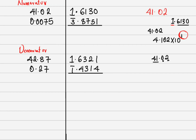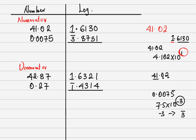For the number less than 1, which is 0.0075, we change it to standard form: 7.5 times 10 raised to power minus 3. That minus 3 is the characteristic, written as bar 3 in the logarithm environment. So minus 3 becomes bar 3. Then checking 75 under 0 in the log table gives us 8751.